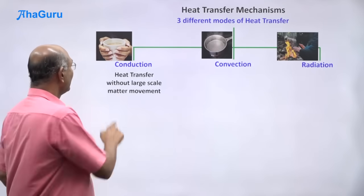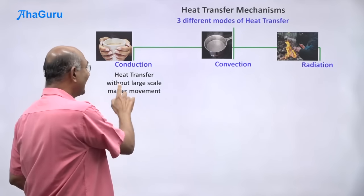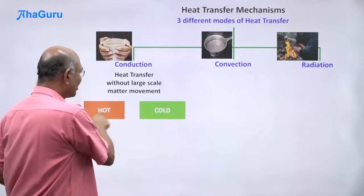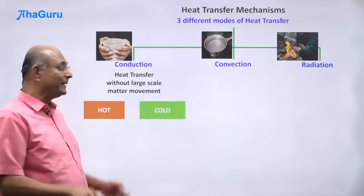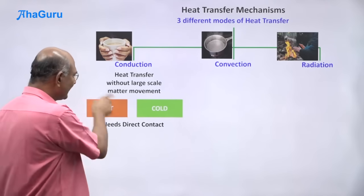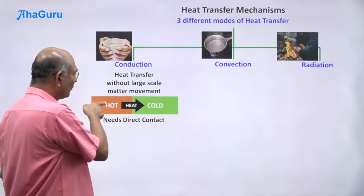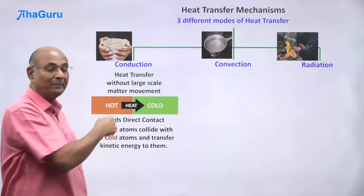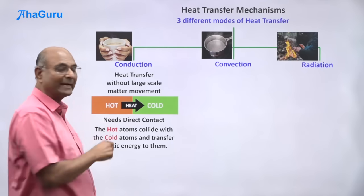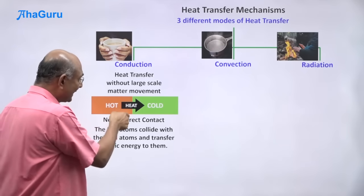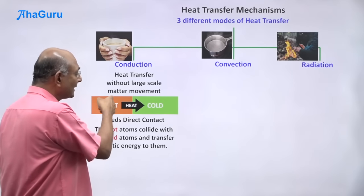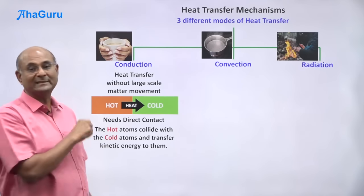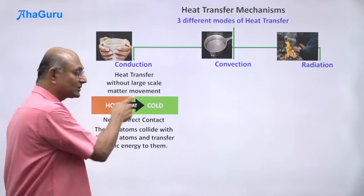Let us now look at conduction more closely. In conduction, heat is transferred without large-scale matter movement. If a hot object and a cold object are not touching each other, there will be no conduction because conduction needs direct contact. When they are in contact, heat flows from the hot to the cold object. The hot object has atoms vibrating very fast — hot atoms. The cold object has atoms vibrating slowly — cold atoms. At the boundary, the hot atoms collide with the cold atoms, and in this collision, the hot atoms transfer kinetic energy to the cold atoms. That is how energy is transferred from the hot object to the cold object — because of atomic-level collisions.